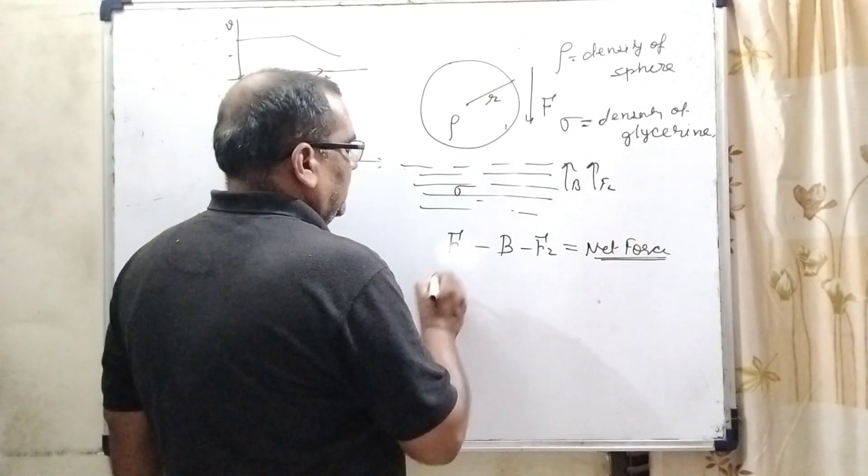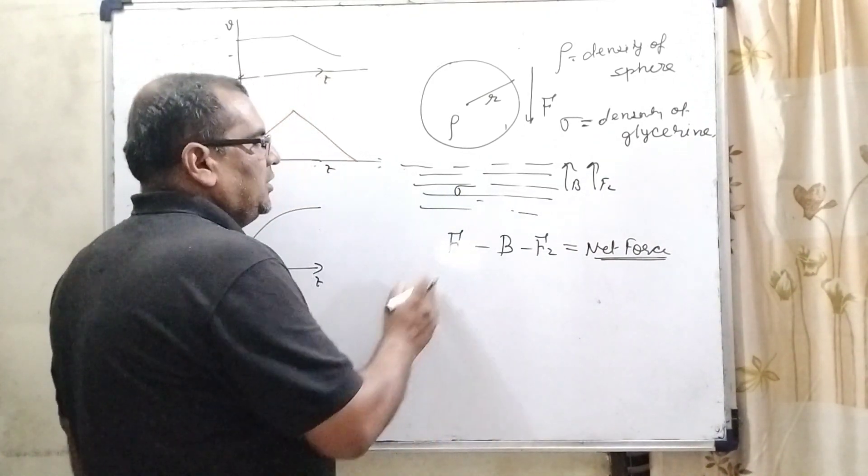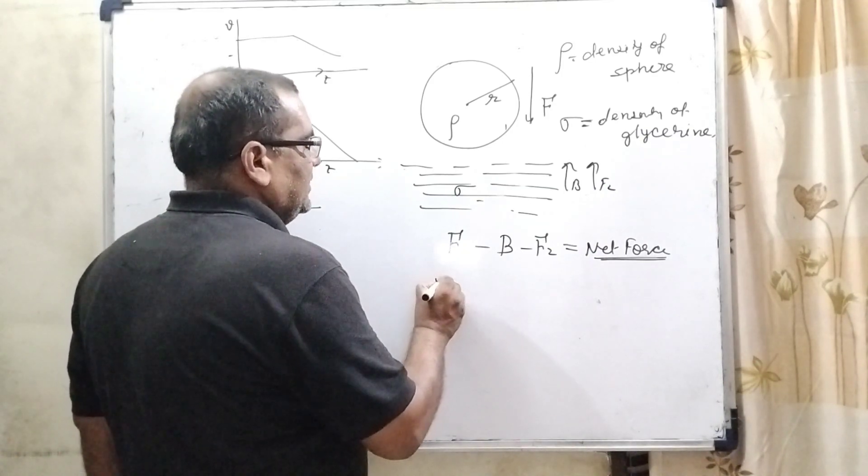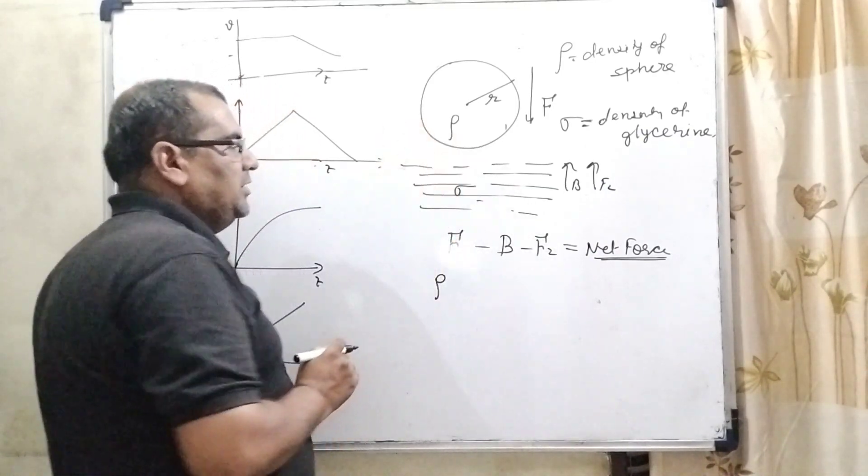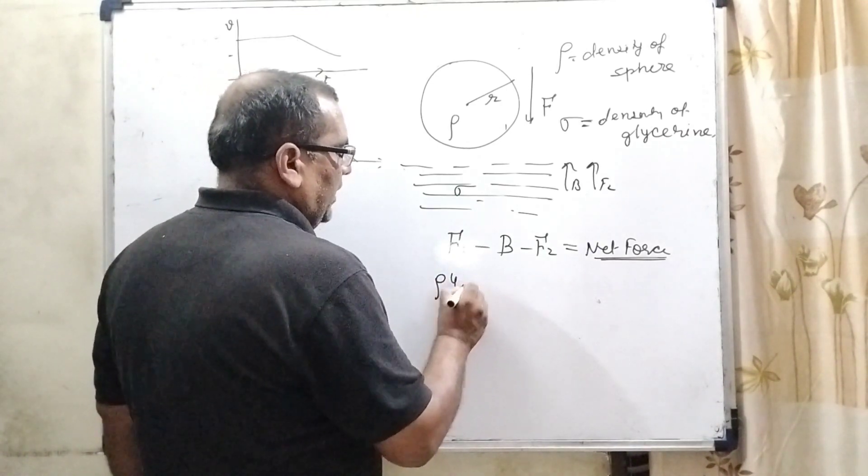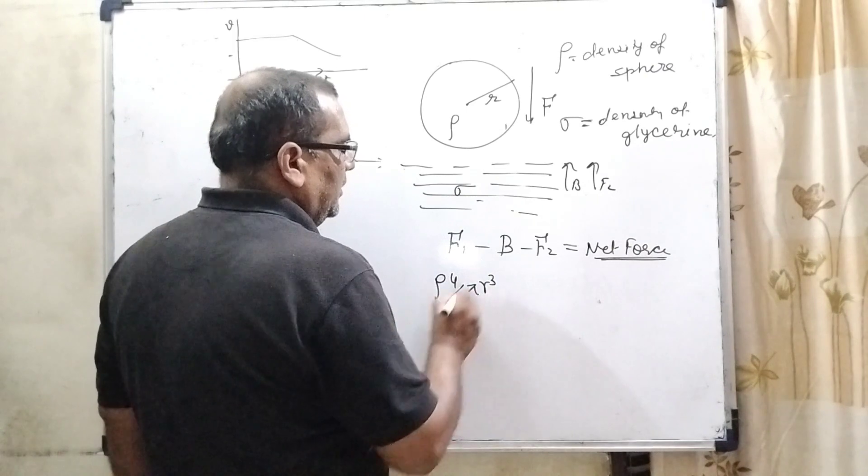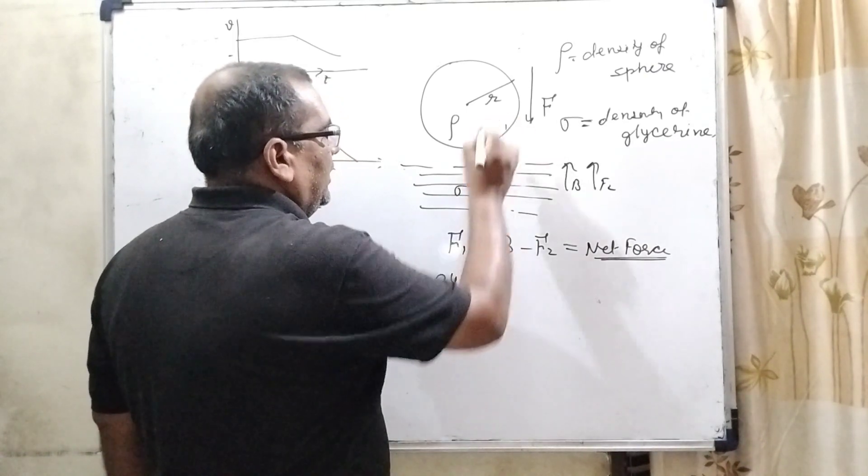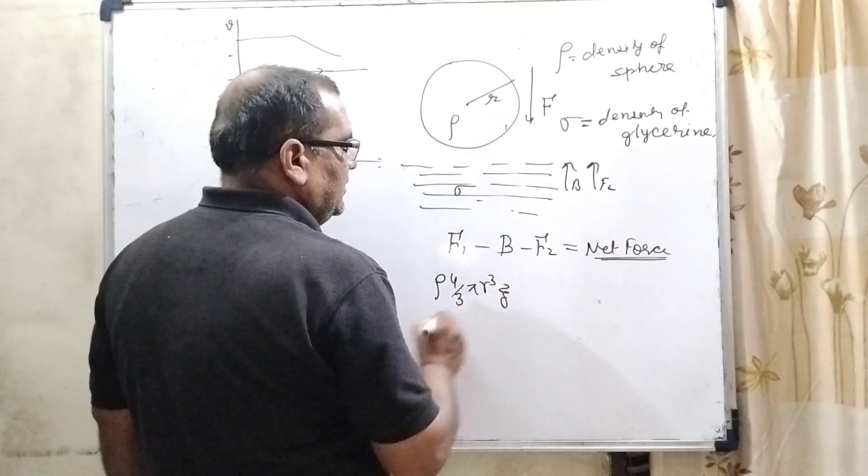Now, F1 here mass into acceleration. So, mass can be written as density. Density of this metallic body sphere is rho. And volume 4 by 3 pi R cube. And here acceleration due to gravity that is G.